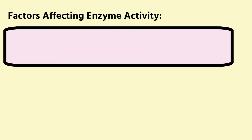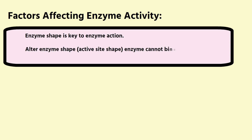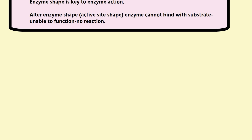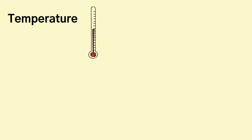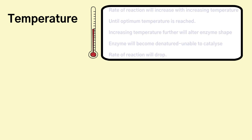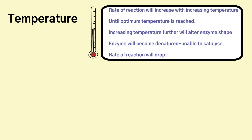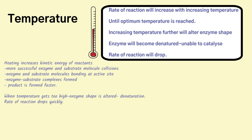Factors affecting enzyme activity: what factors will interfere with how an enzyme works? Remember, enzyme shape is key to enzyme action, and if anything alters enzyme shape, it will alter active site shape. Therefore the enzyme-substrate complex cannot be formed and there's no reaction. In every chemical reaction, temperature plays a key consideration. The rate of reaction will generally increase when you increase the temperature until an optimum temperature is reached, because if you increase the temperature above the optimum, you're going to alter enzyme shape — the enzyme will become denatured and unable to catalyse, so the rate of reaction will drop.